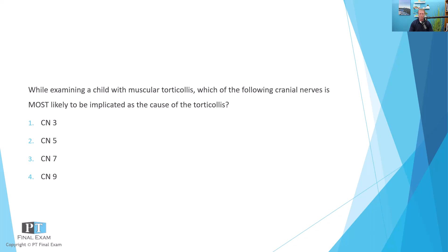This question asks which cranial nerve is most likely implicated as the cause of the muscular torticollis. If you're like me, you would immediately think about cranial nerve 11, the spinal accessory nerve, which is involved with the sternocleidomastoid muscle — the muscle that's clearly tight in the case of muscular torticollis. However, we see from our answer options — cranial nerve three, five, seven, and nine — that obviously 11 is not a part here.